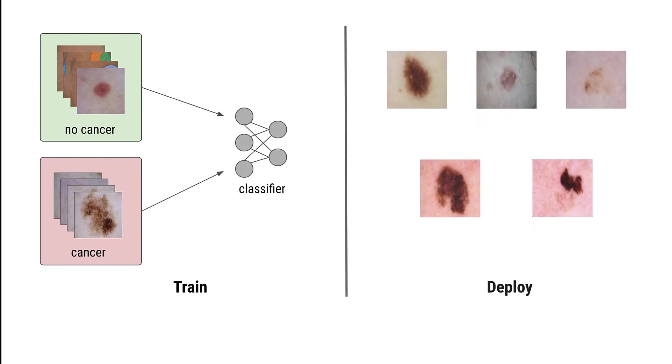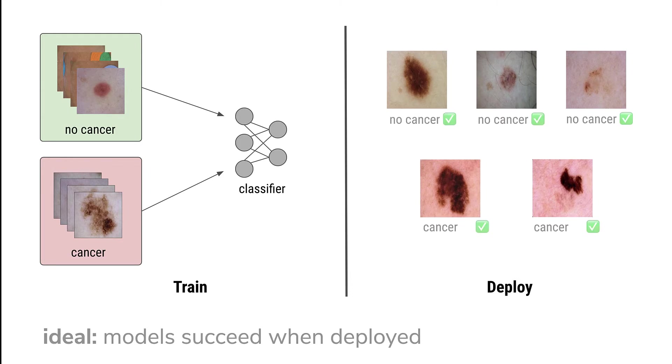In typical machine learning pipelines, we want to use some data to train a predictive model. Ideally, the model will succeed when it is deployed. In this example, we want this skin cancer classifier to make correct predictions for new patients.